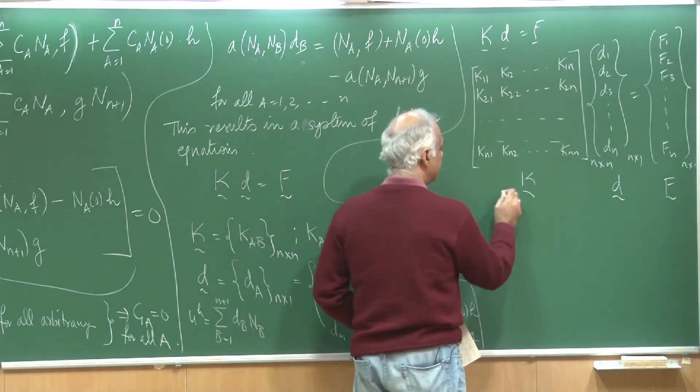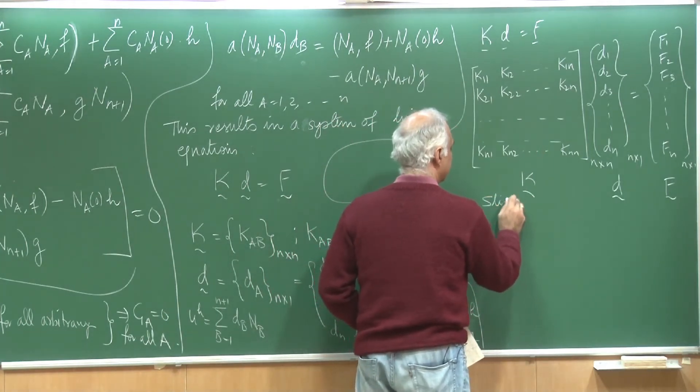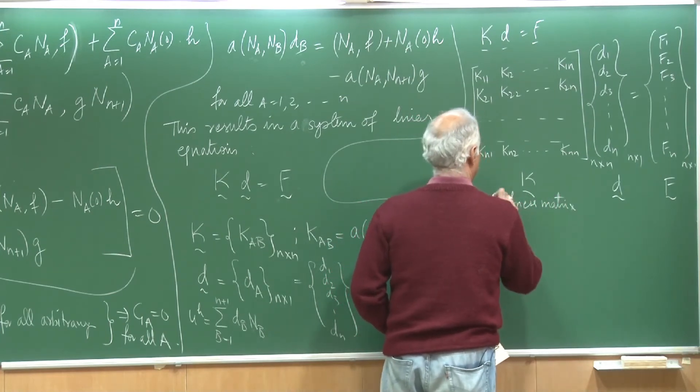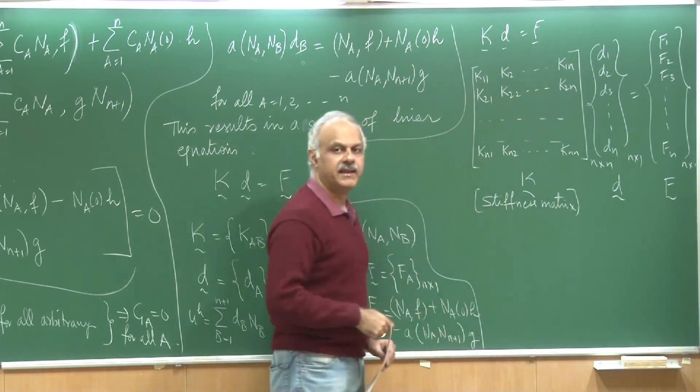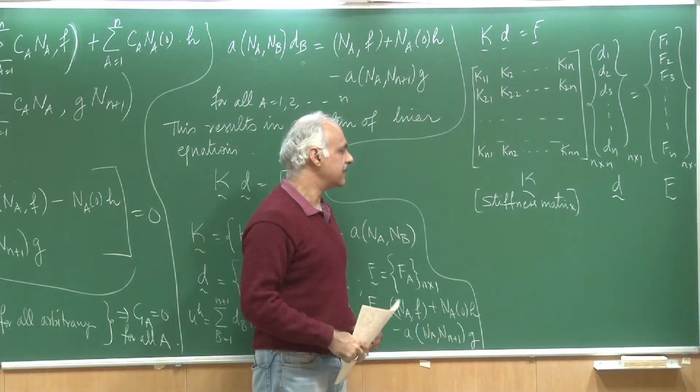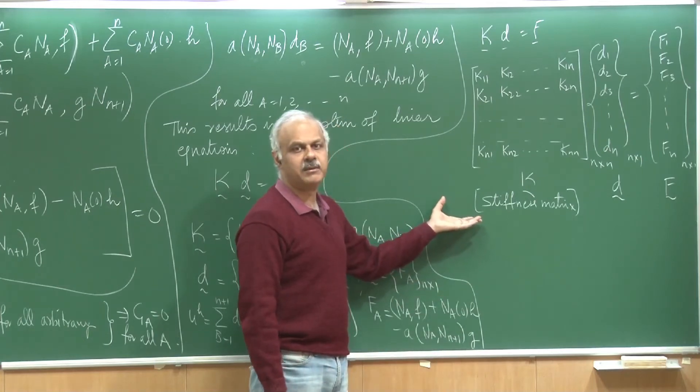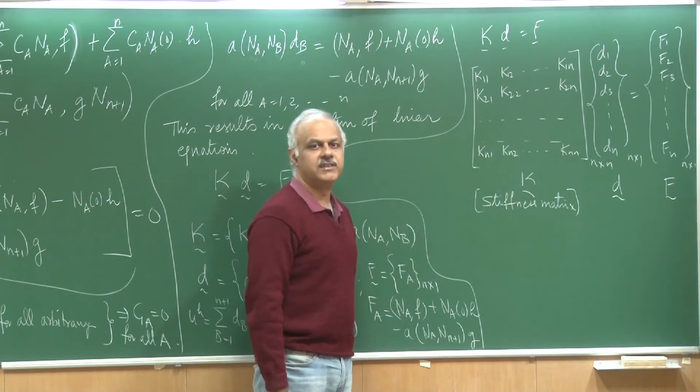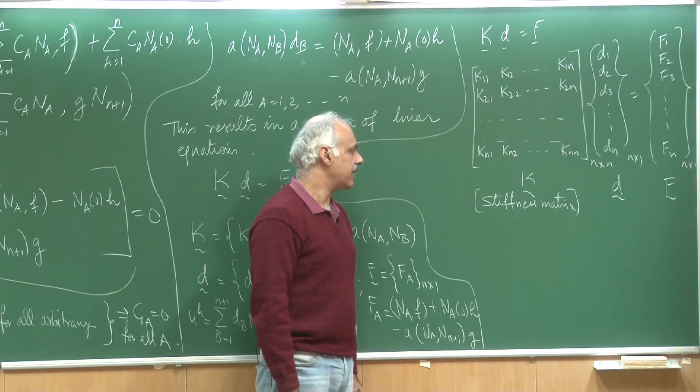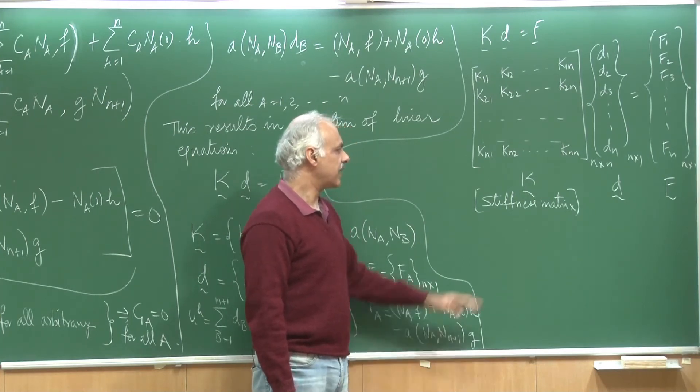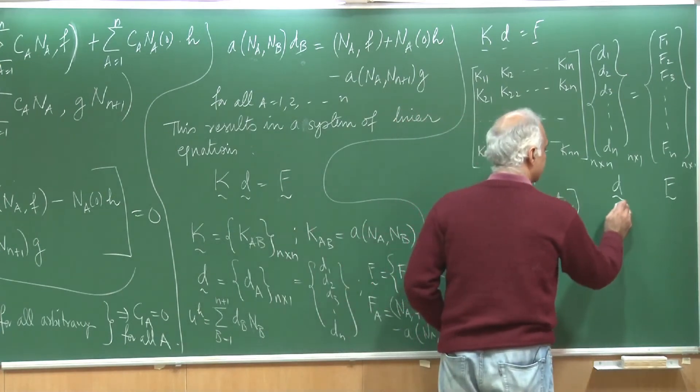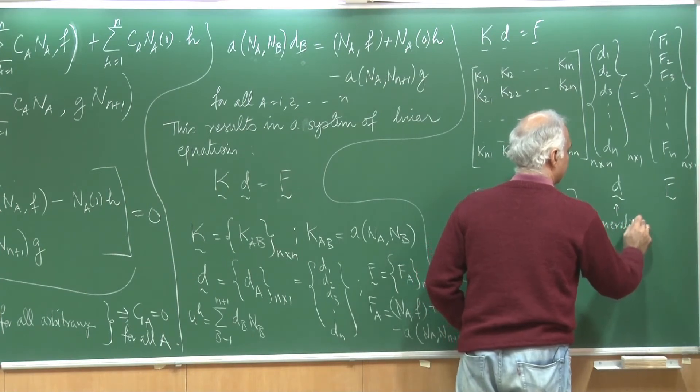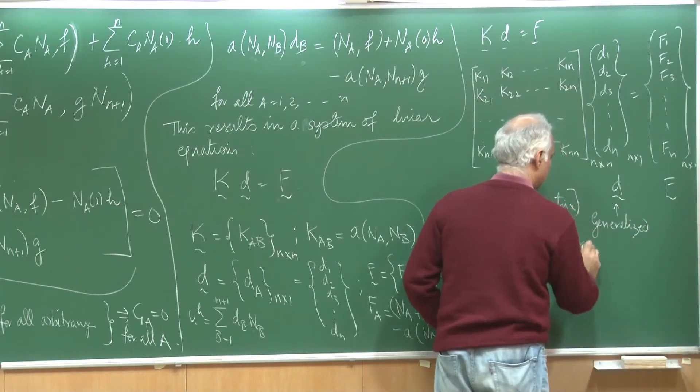There is a name given for this in finite element. This is known as the stiffness matrix. K in general is called the stiffness matrix. Even though we may be doing heat transfer or we may be doing fluid mechanics, the name stiffness matrix has stuck on because initially the method was applied to solid mechanics. D is known as the displacement vector or we can call it the generalized displacement vector.